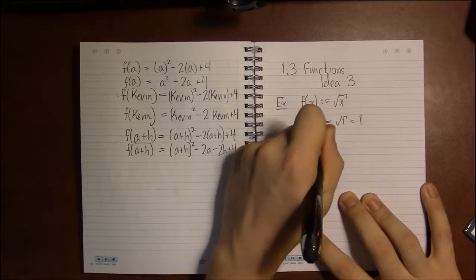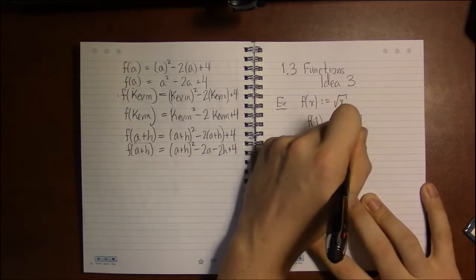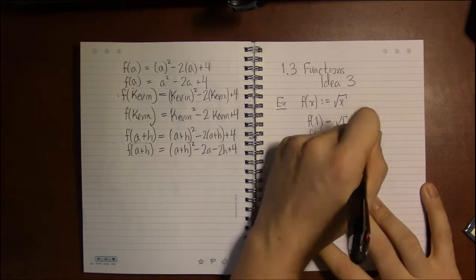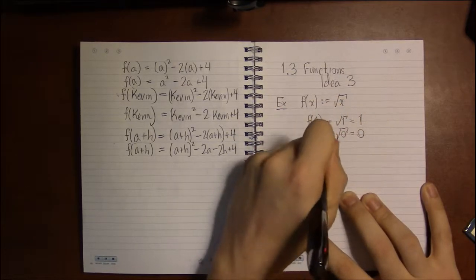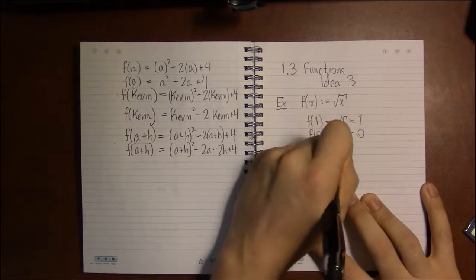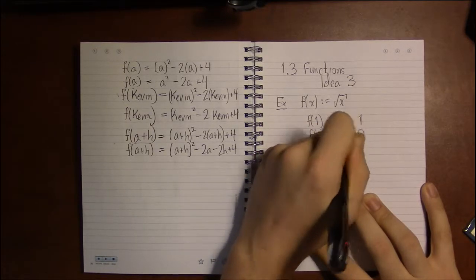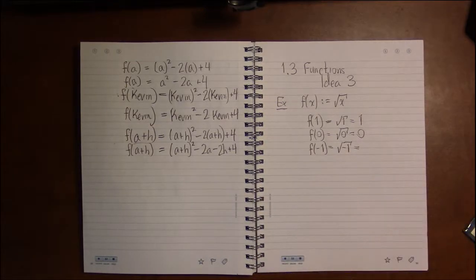I can evaluate it at 0 and get a perfectly reasonable answer. Square root of 0 is 0. And then I can evaluate it at minus 1 and have everything thrown into disarray.